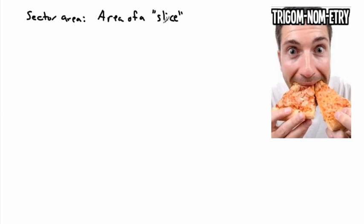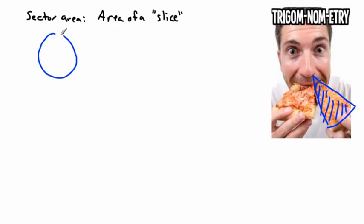We also have something called sector area, which is the area of a slice — like a slice of pizza, a piece of a whole circle. How do you find that area? I'll draw a nice circle with radius r and a slice. The area of that slice depends on your angle theta.